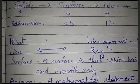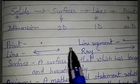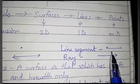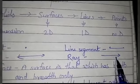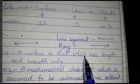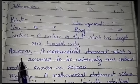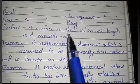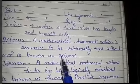Definition: A point is that which has no part — no length, no breadth, no height. A line has no endpoints and can extend in both directions. A line segment has two endpoints. A ray has only one endpoint and extends in one direction. A surface is that which has length and breadth only — it is a 2D shape.